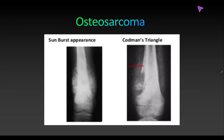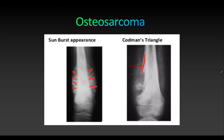The femur is the most common site for bone tumors. An important one is osteosarcoma. In the lower end of femur, the tumor grows outwards, producing a sun-burst appearance — radiating outgrowths like the sun's rays. Another feature is the Codman's triangle, a triangular area of bone growth caused by periosteal elevation as the tumor grows, inducing bone growth in that region. These are features suggestive of osteosarcoma.